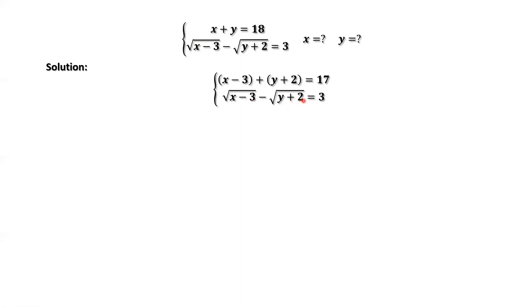We rewrite the first equation as x minus 3 plus y plus 2. Negative 3 and positive 2 together equals negative 1. The right-hand side 18 minus 1 equals 17.